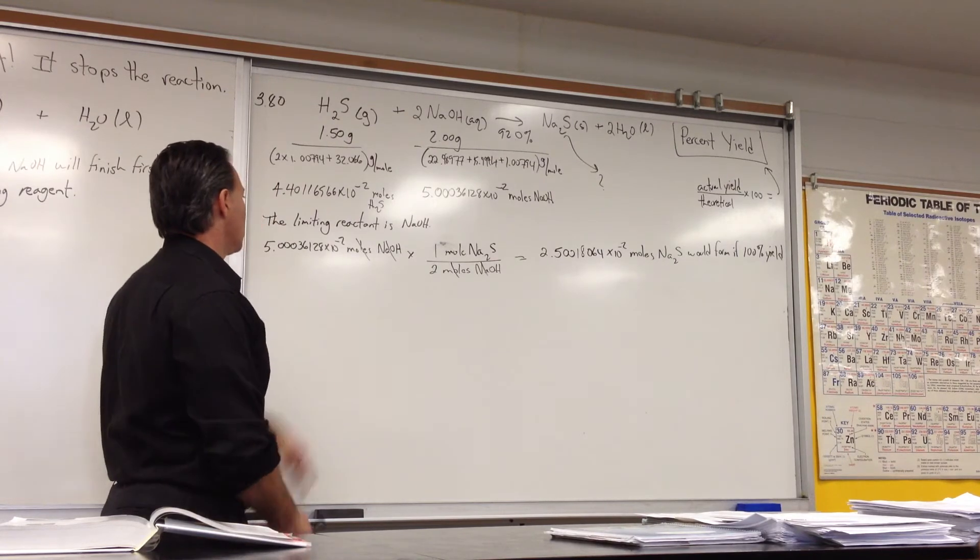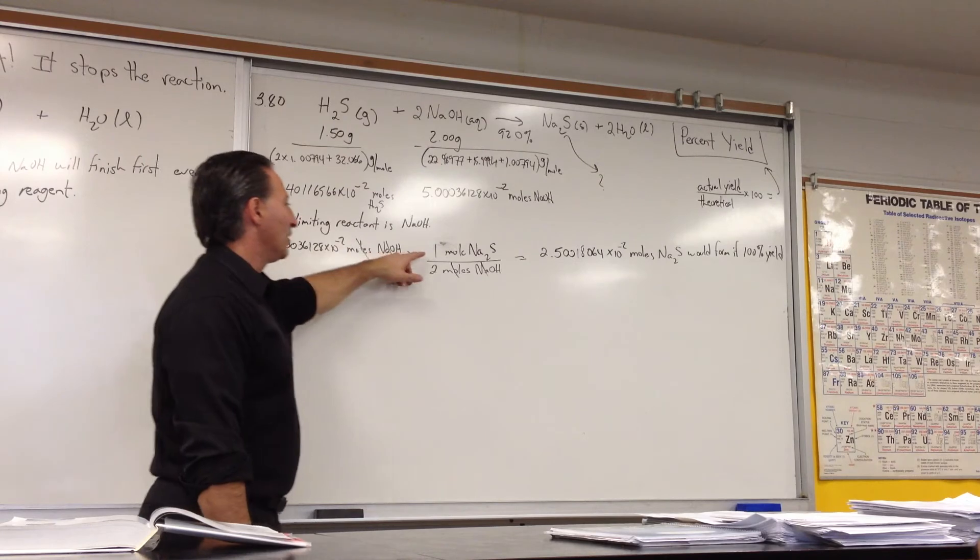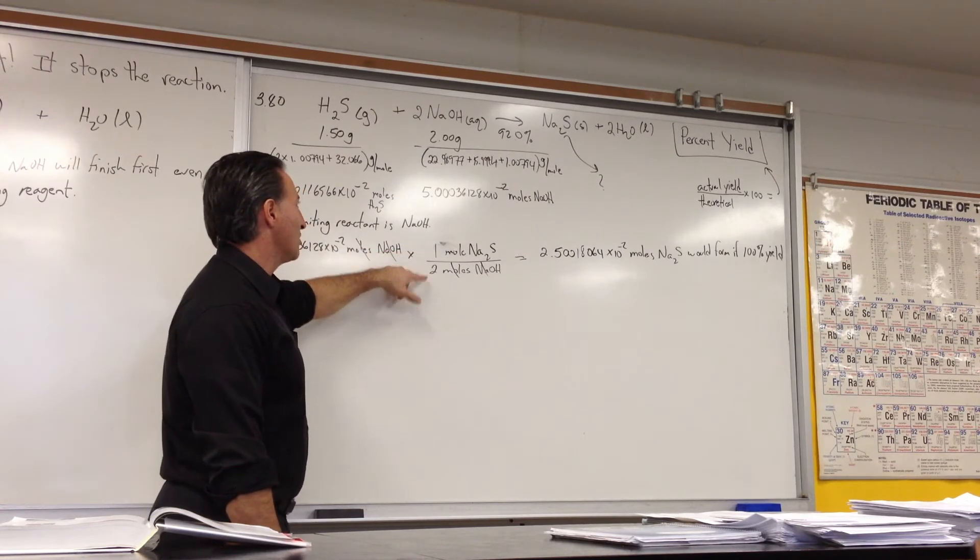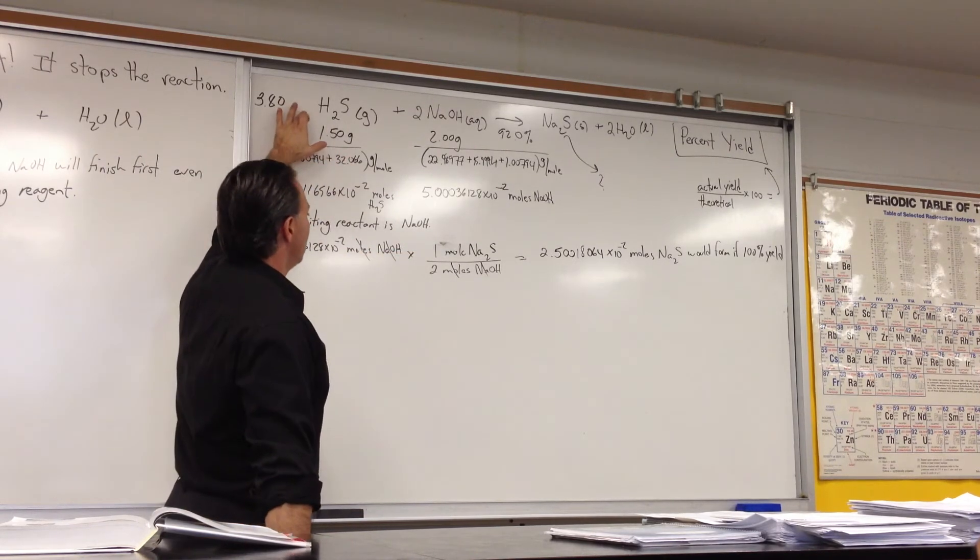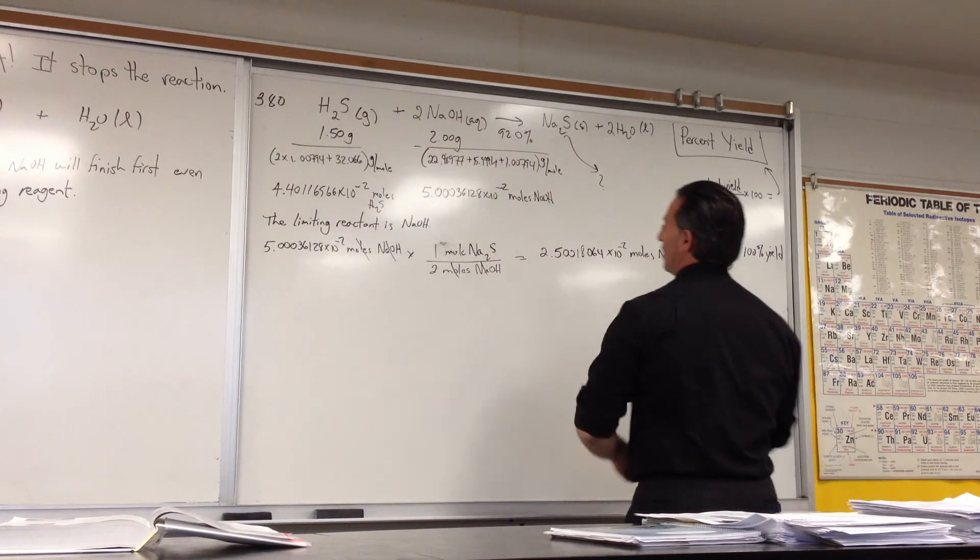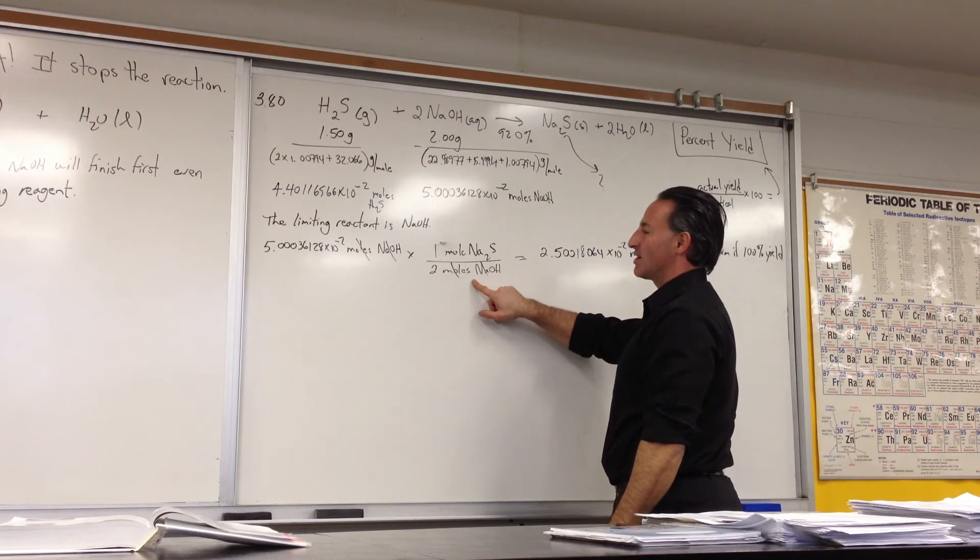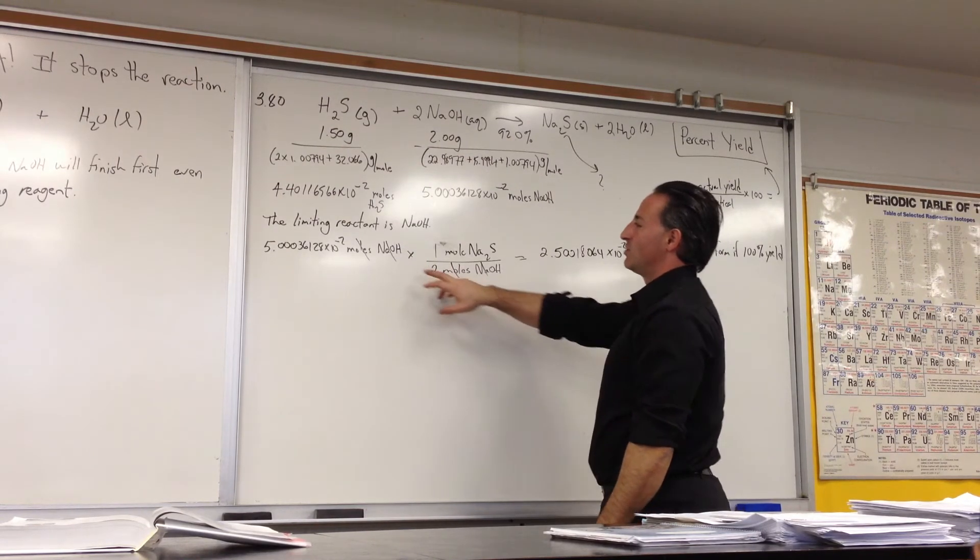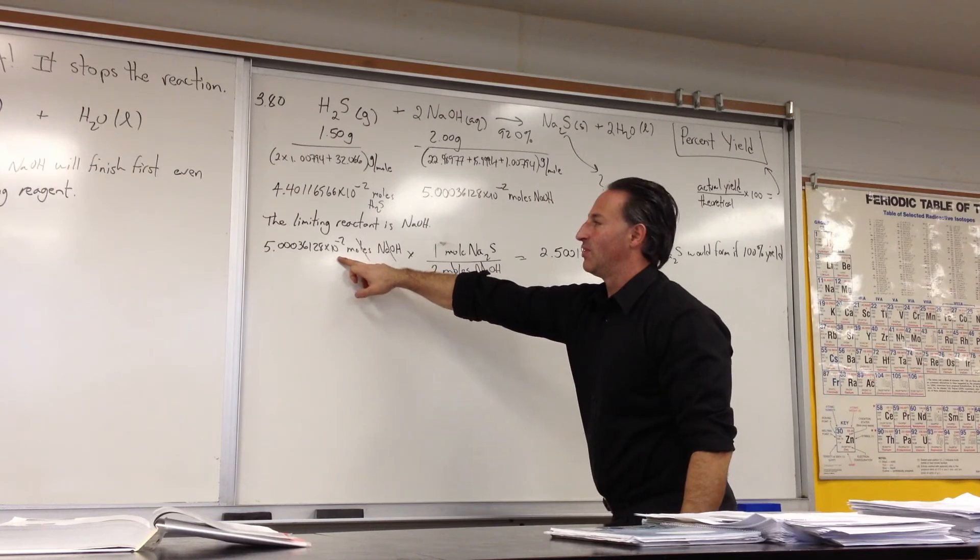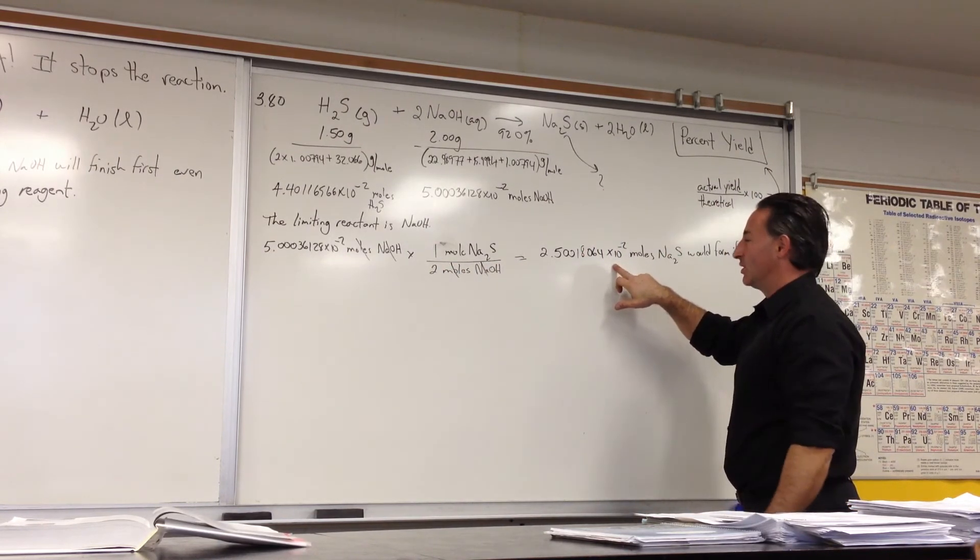So we start the calculation with the limiting reagent. We multiply by the stoichiometry of the reaction, which is 1 mole of sodium sulfide. How much sodium sulfide is being produced? 1 mole of sodium sulfide is produced for every 2 moles of sodium hydroxide used. Which means you're going to get half as many moles of sodium sulfide being produced. This is the theoretical yield.